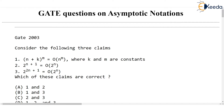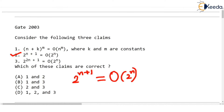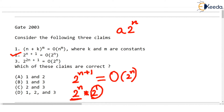Coming to the second claim: 2^(n+1) — observe that n+1 is in the exponent — can be written as O(2^n). This claim is also correct. Because 2^(n+1) is nothing but 2^n multiplied by 2^1. Exponents get added. This multiplication by 2 is just a constant multiplied by 2^n.